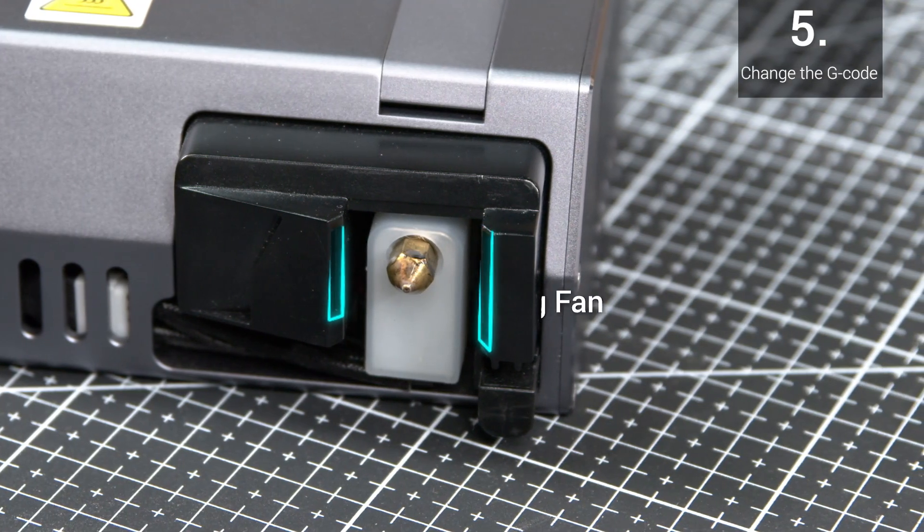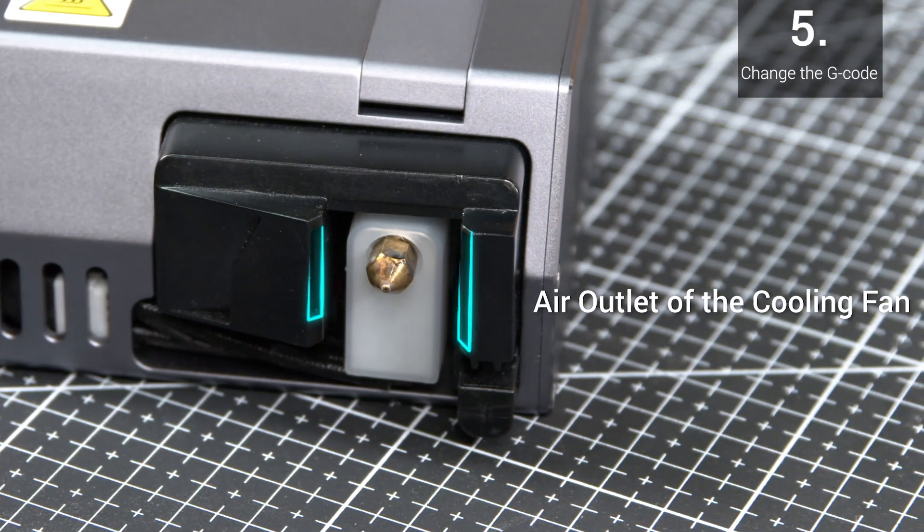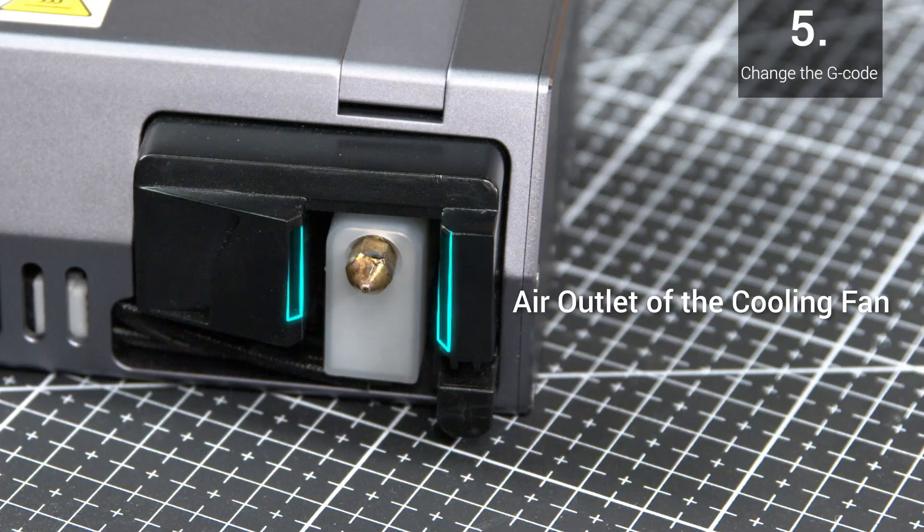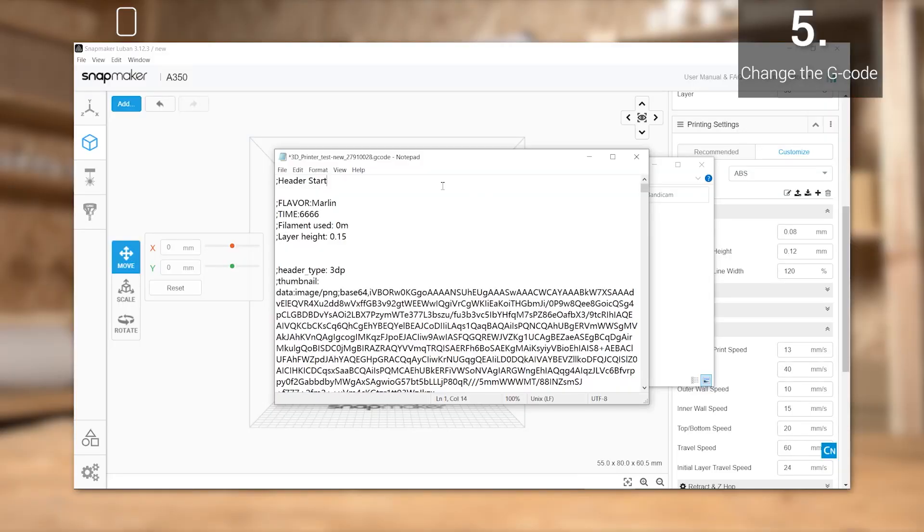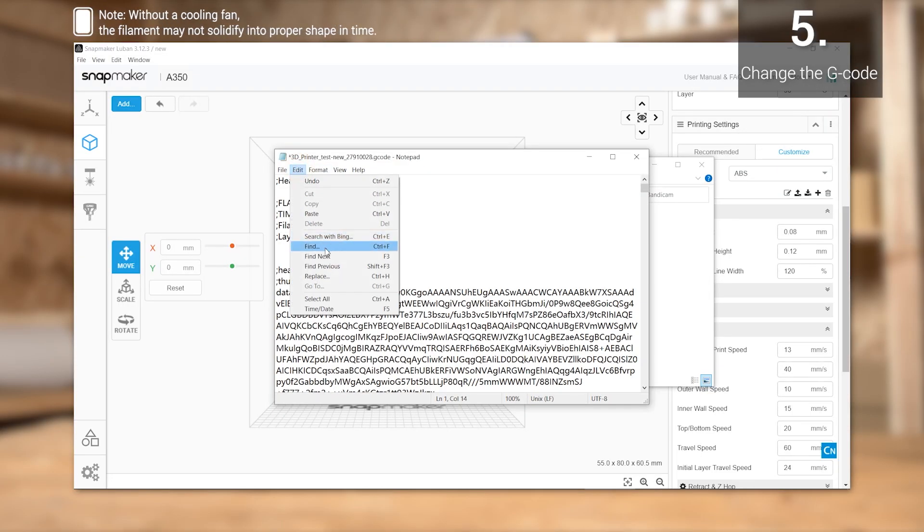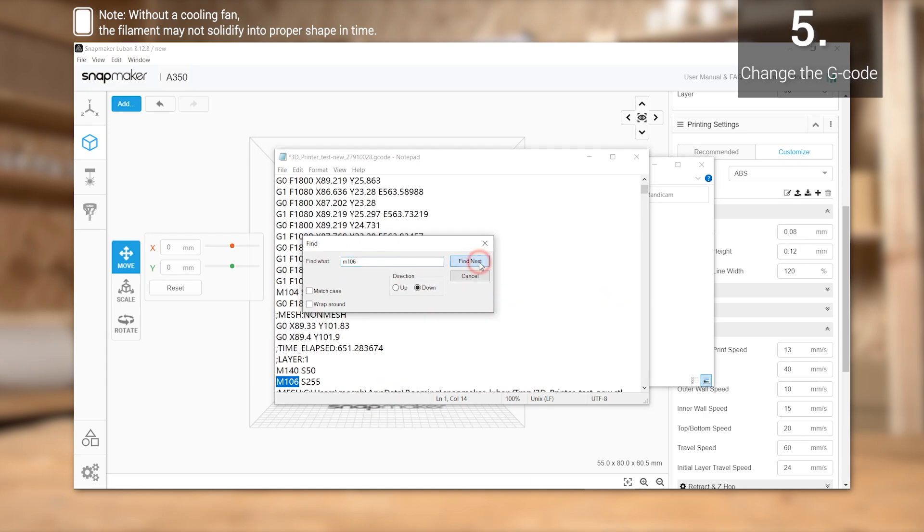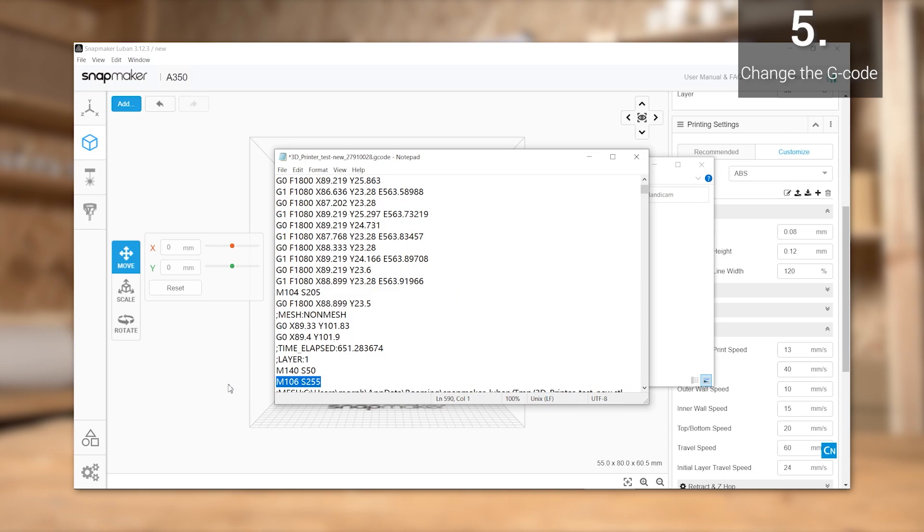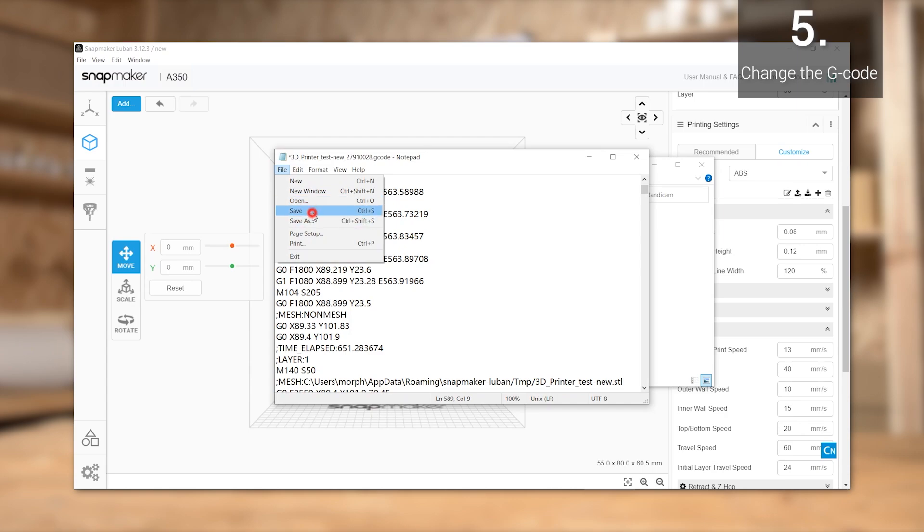The last one is sort of unconventional, changing the G-code to turn off the cooling fan if necessary. Export the G-code, open it with Notepad, find and delete the line of M106-S255, then save the file and load it to the machine. By changing the code, we can minimize the airflow around the nozzle and let the filament cool more slowly.